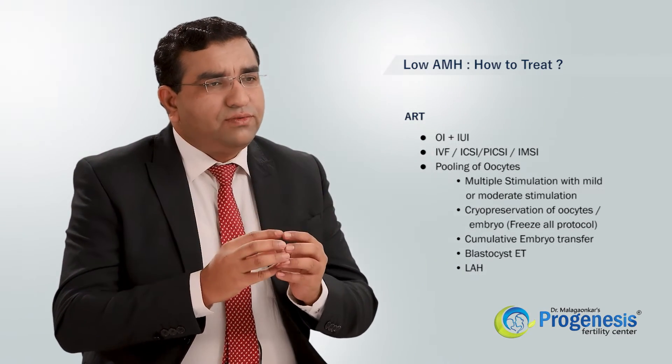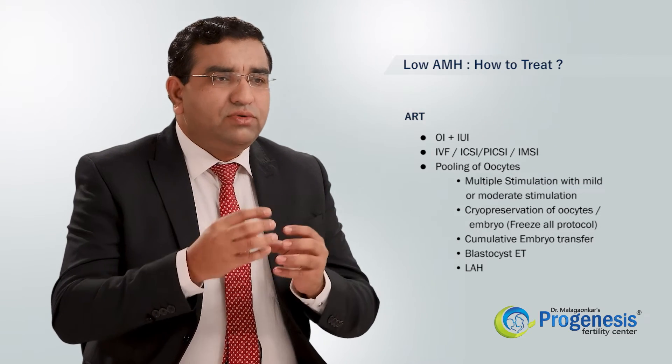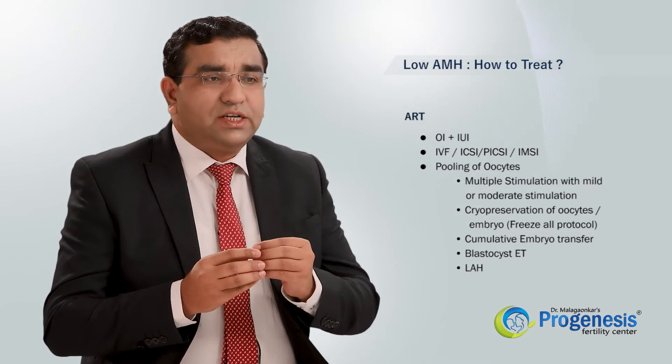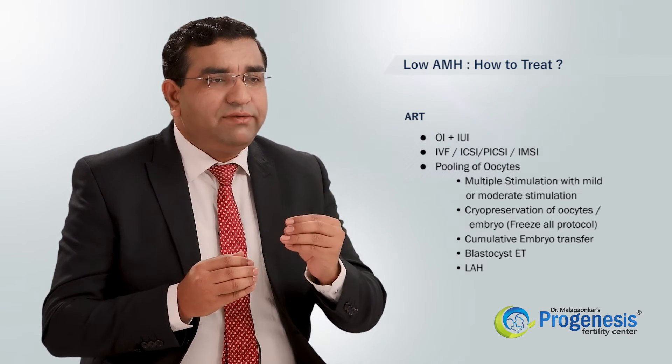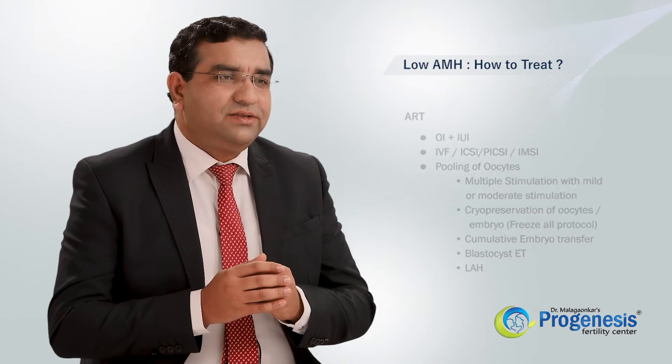When AMH is on the lower side, we do oocyte pooling — multiple stimulation cycles to retrieve oocytes, develop embryos, and freeze them. This is called the freeze-all protocol. Once two or three good-quality embryos are available, we perform cumulative embryo transfer. Blastocyst embryo transfer is also a very good modality, and laser-assisted hatching helps greatly for such patients.